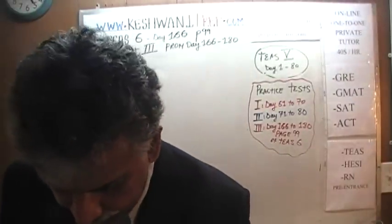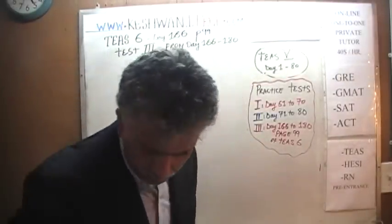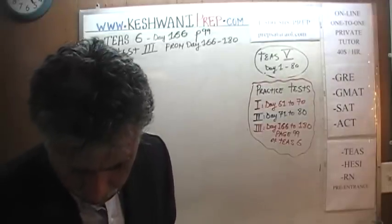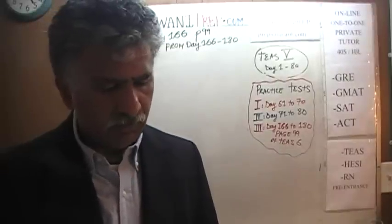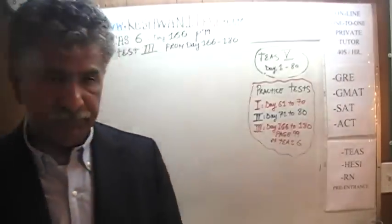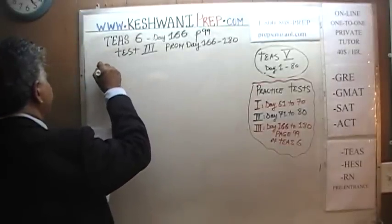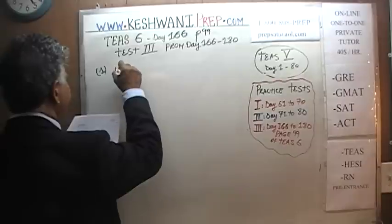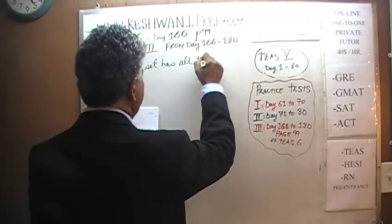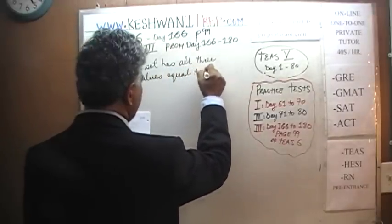Problem number 1 on page 99. They are asking: in which of the following sets of terms are all three values equal? We have to find an answer choice where all three values are equal to each other.